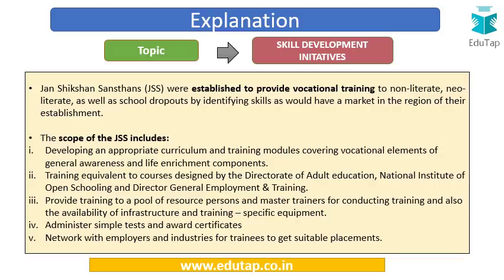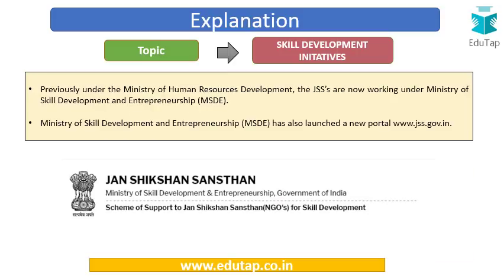JSS also focuses on administering simple tests to check whether people are learning, and awarding certificates at the end. They also build a network with employers and industries to provide suitable placement to trainees. Regarding the administrative framework, JSS was previously under the Ministry of Human Resources Development, but now works under the Ministry of Skill Development and Entrepreneurship, which has also launched a new portal at www.jss.gov.in.